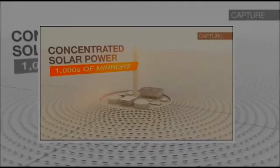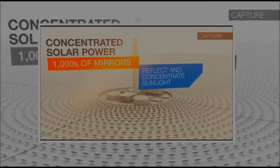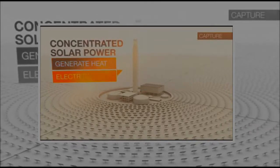Concentrated solar power uses thousands of mirrors to reflect and concentrate sunlight onto a central point to generate heat, which in turn is used to generate electricity.